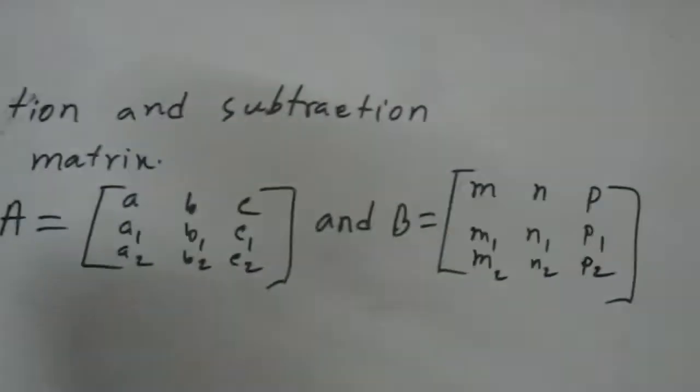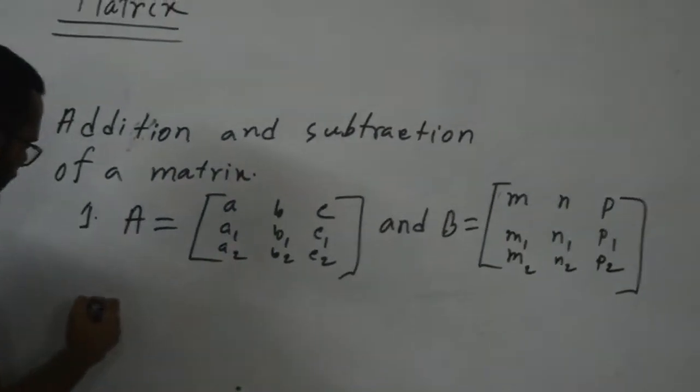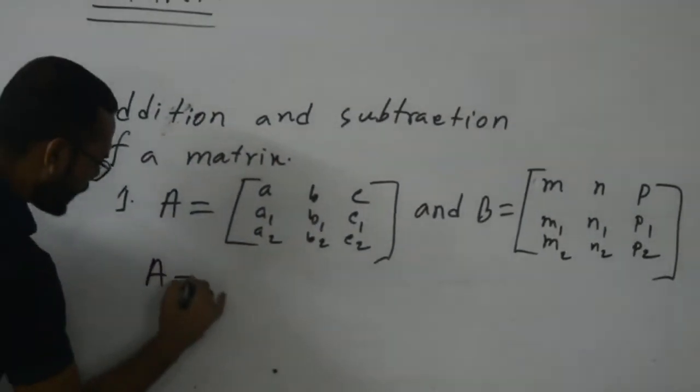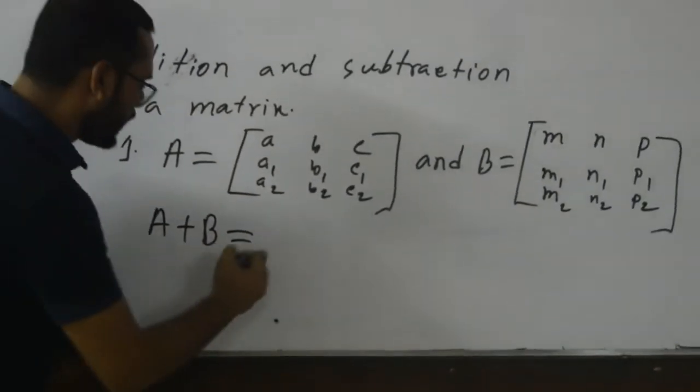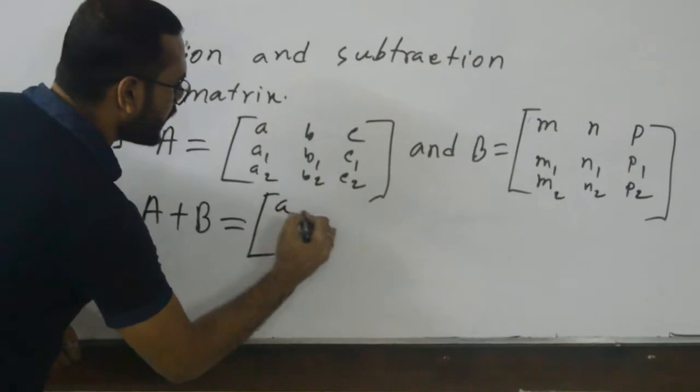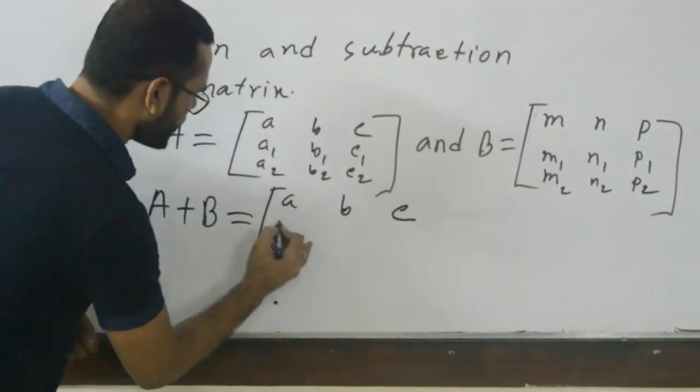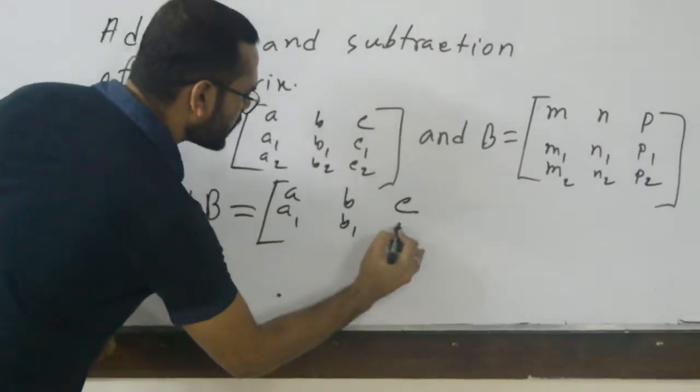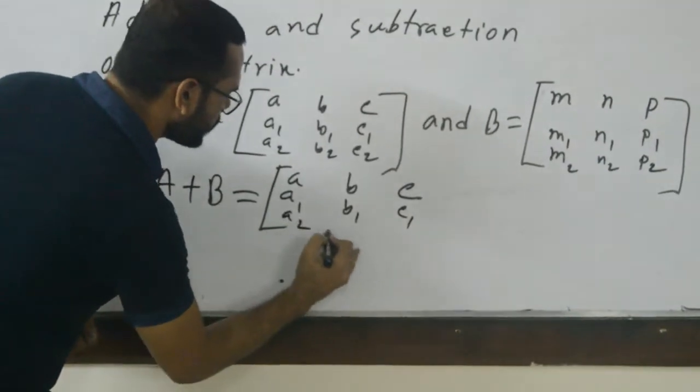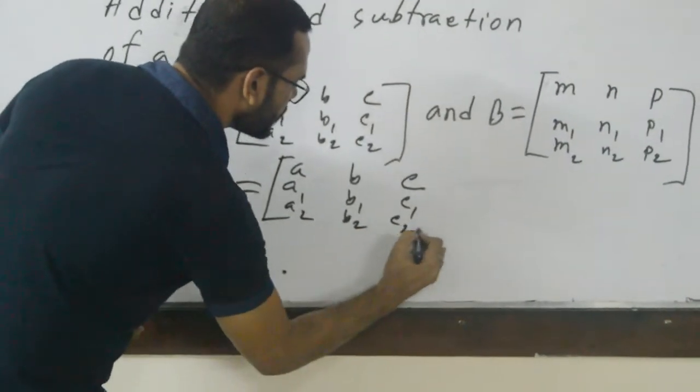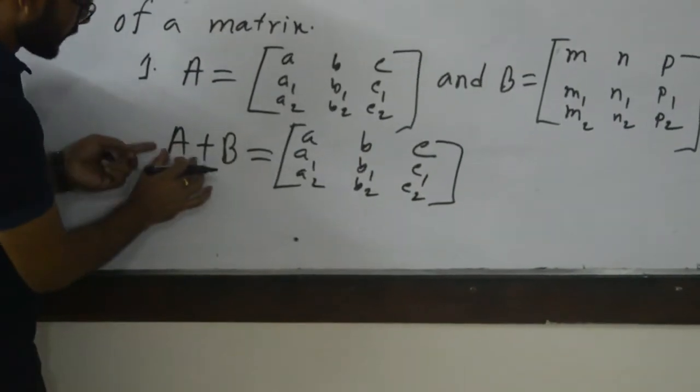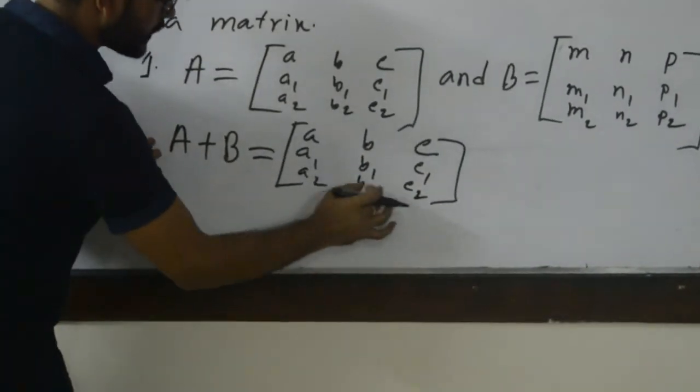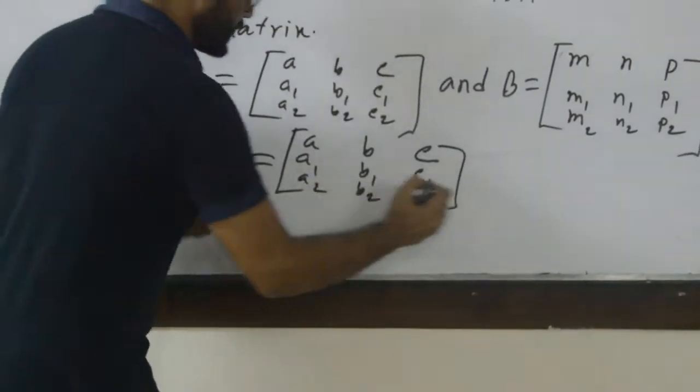Then, how do you add these two matrices? That is, A plus B. Here, have a look. Matrix A with entries a, b, c, a1, b1, c1, a2, b2, c2. Because A is this one, in replacement of A, we can write this matrix forward. And then, addition.